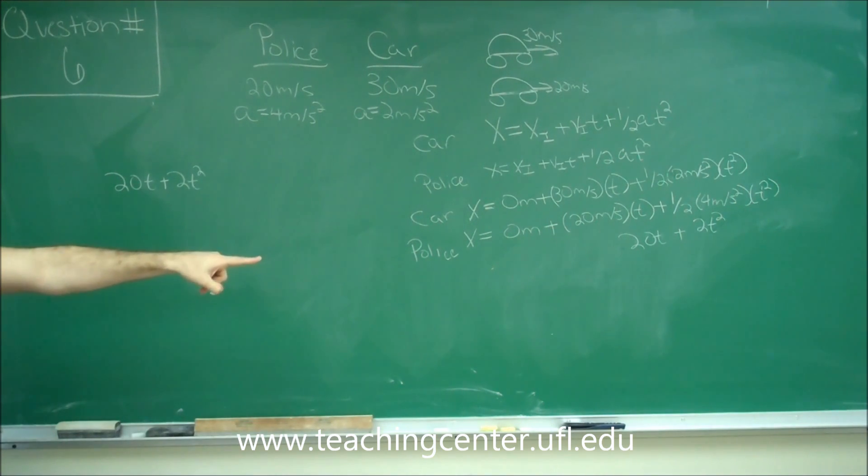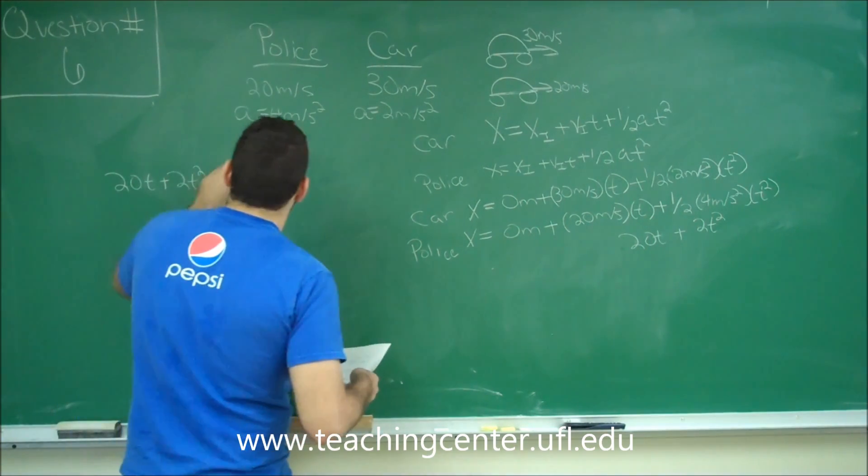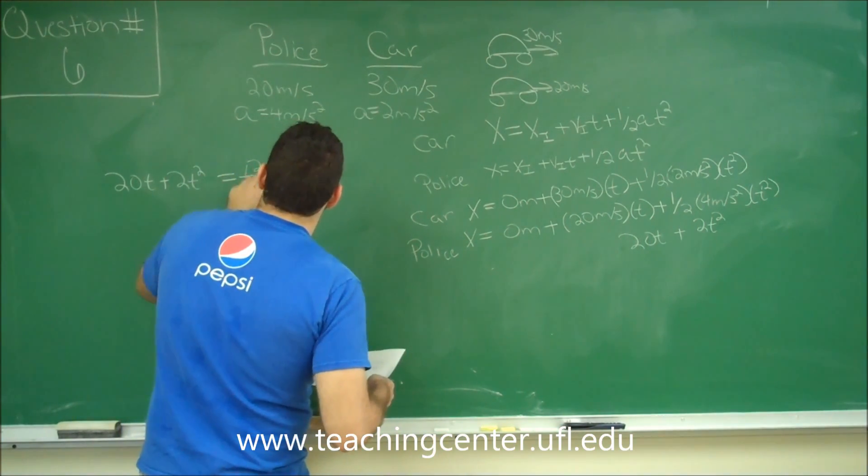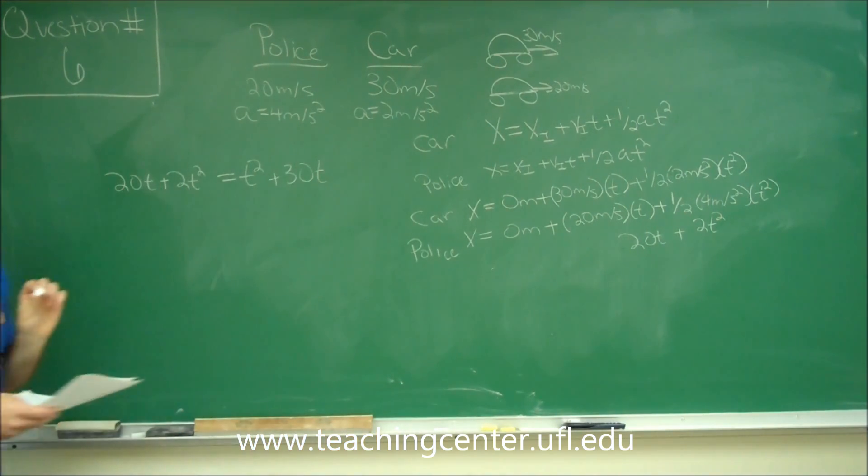And as we can see over there for the car, we have one half times 2 meters per second squared. So it's just going to be t squared plus 30t. So we can go ahead and set those equal to each other. t squared plus 30t.